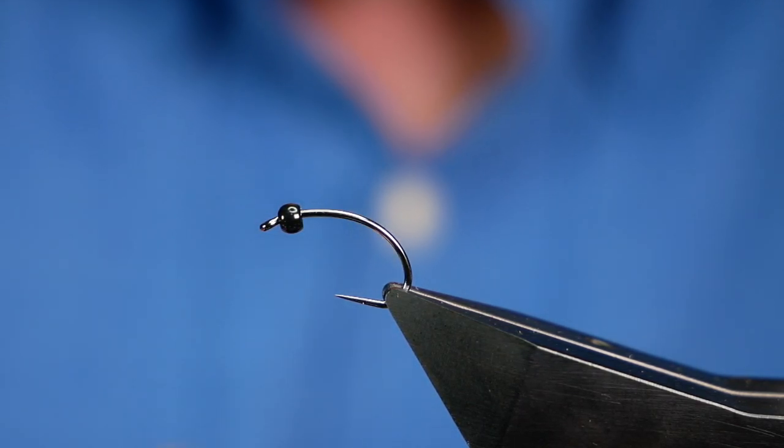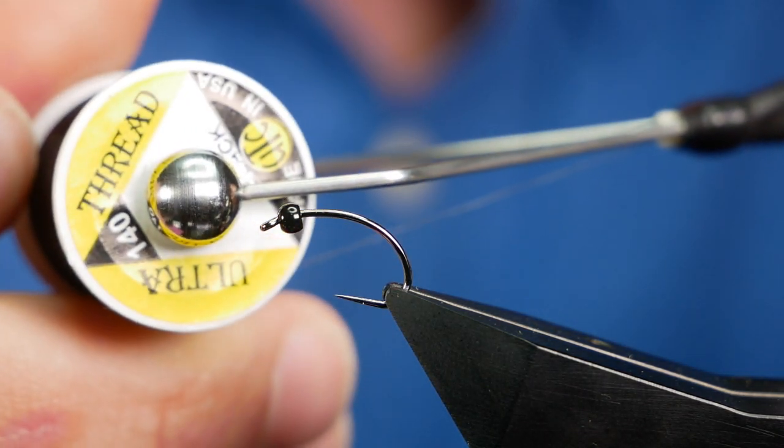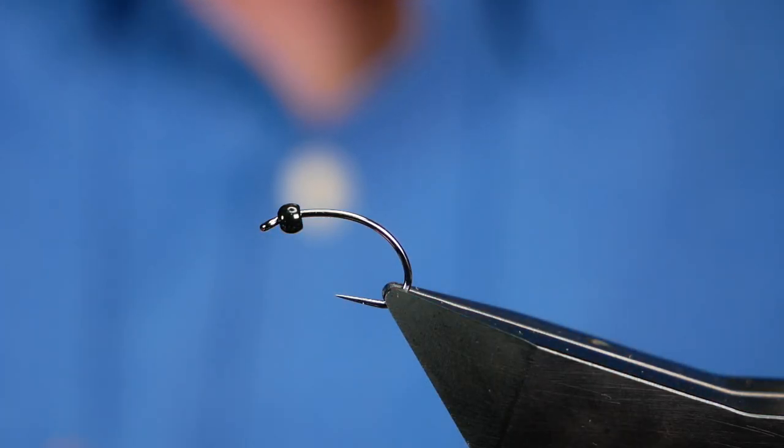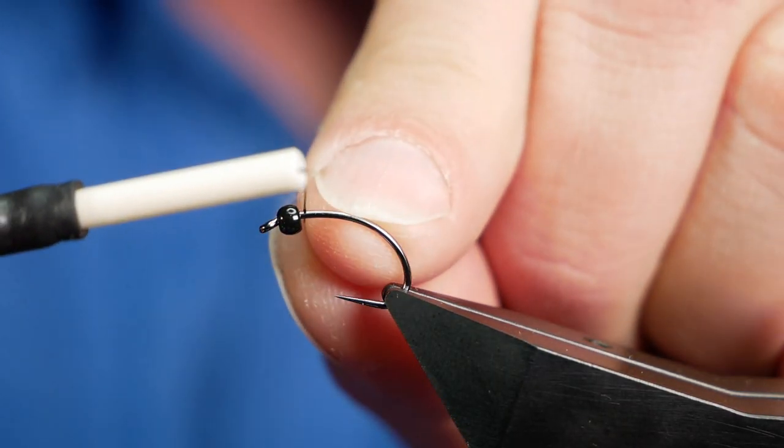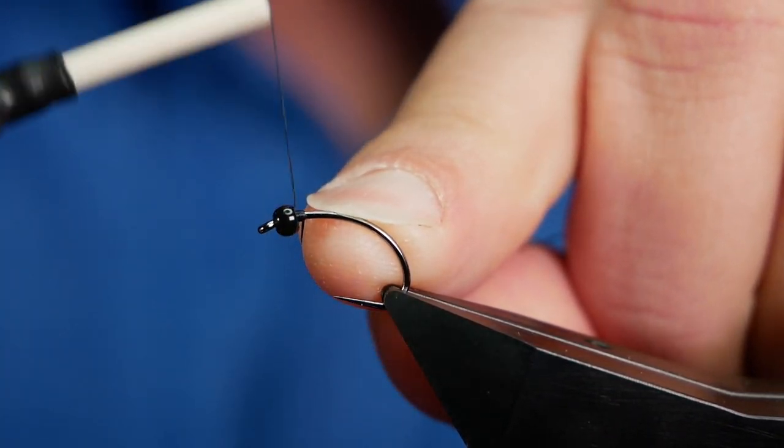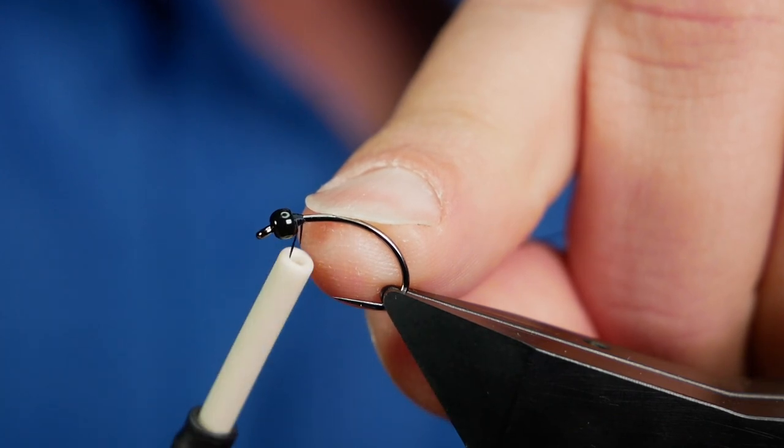The thread I'm going to be using today is from UTC, it's in black and it's a 140 denier thread so nice and thick. First thing I'm going to do then is catch on in behind the bead and just build a little bump to stop it moving around.